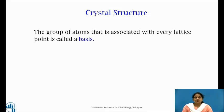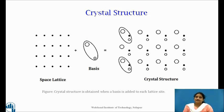The crystal structure is formed only when a group of atoms is identically attached to each lattice point. This group of atoms that is associated with every lattice point is called a basis. Thus, the crystal structure is a combination of space lattice and basis.